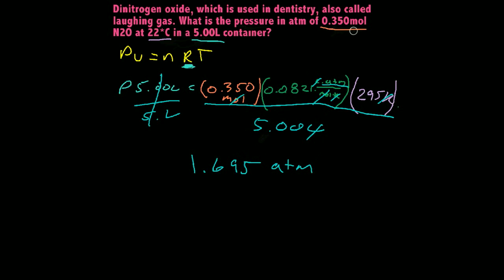So it's 1.695 ATM. And we've got four significant figures here. We've got two there, two there, three there. So we really just need two significant figures in our problem here. So 1.695 is really going to be equal to 1.7 ATM. And that would be our final answer.